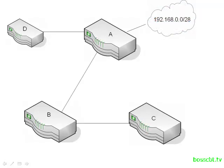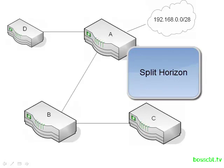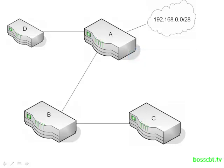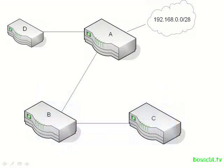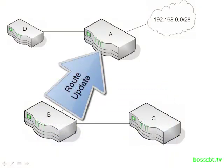If that were the end of the story, we really wouldn't have any use for a distance vector. However, there is a mechanism to combat the counting to infinity problem, and this feature is known as split horizon. The logic is simple: if I learn some information from you, it makes no sense for me to turn around 30 seconds later and tell you about the same information you just told me. With split horizon enabled, all routers follow a very simple rule: don't advertise routes back to the router you learned them from. It's a common sense measure.